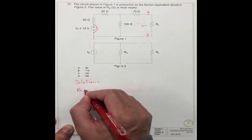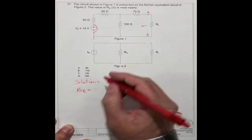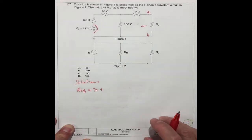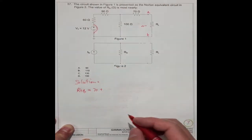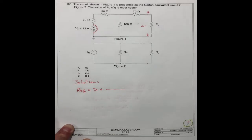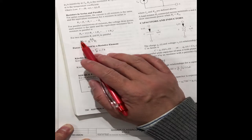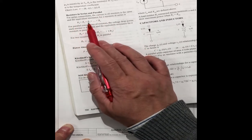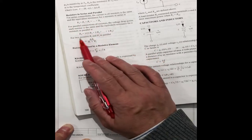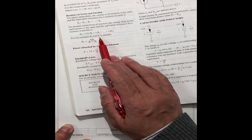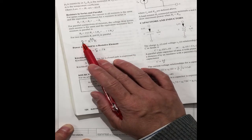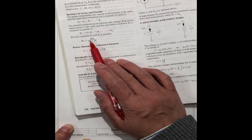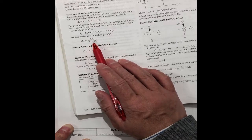So the equivalent is equal to: this one is 70 Ω, plus this one with this one in parallel. We can get the formula from the FE handbook, page 194. For resistors in series and parallel — in series you just add them one by one. If it is two resistors R1 and R2 in parallel, the equivalent resistor equals R1 times R2 divided by R1 plus R2.